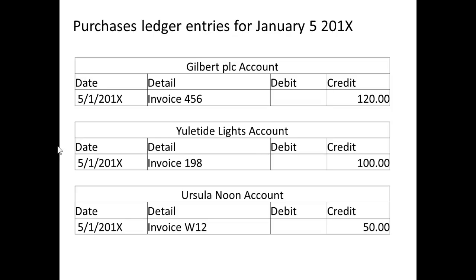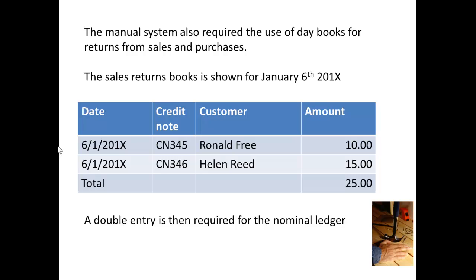In the purchaser's ledger, in the same way, you will show separate accounts for Gilbert, Yuletide Lights, and Ursula Noon. And, just as those were entries as credits to trade payables, so they will be entered as credits here. They record what we owe to each of these suppliers.